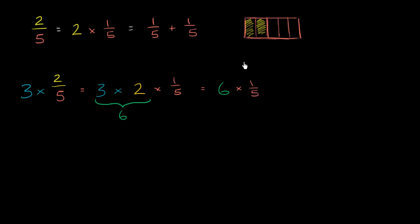And if we were to try to visualize that again, so that's a whole, that's another whole. Each of those wholes have been divided into 5 equal sections, and so we're going to color in 6 of them.